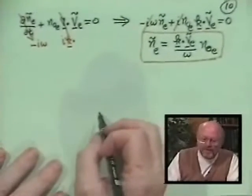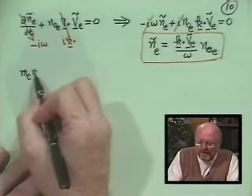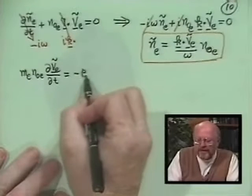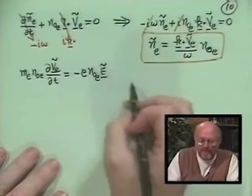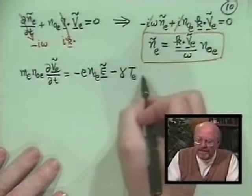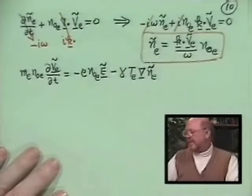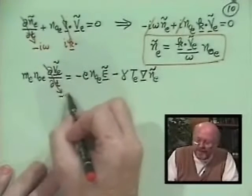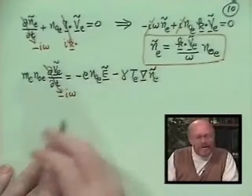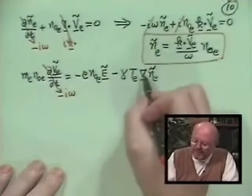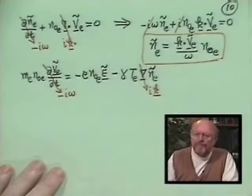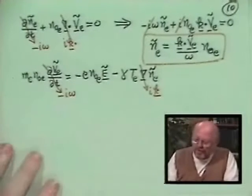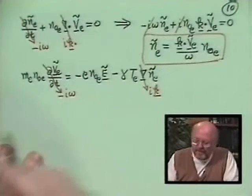So now our next equation was the momentum balance equation. That was M_E N₀_E partial of Ṽ_E with respect to T is equal to minus e N₀_E electric field minus γT_E gradient of Ñ_E. Again, all we have to do is say partial with respect to T is minus iω. There's no gradients except that E is minus grad φ. And this gradient is iK vector. We want to solve for the perturbed flow velocity.